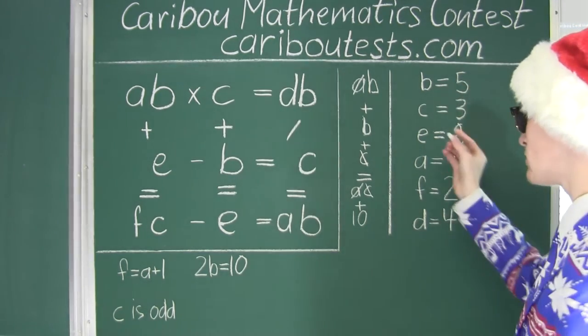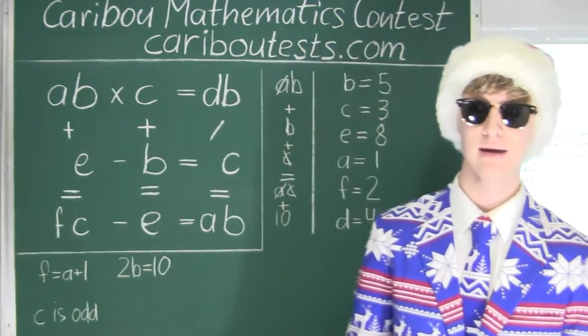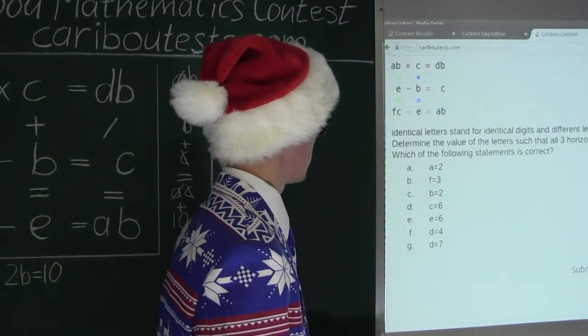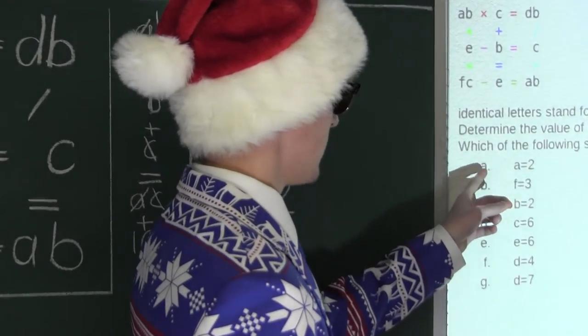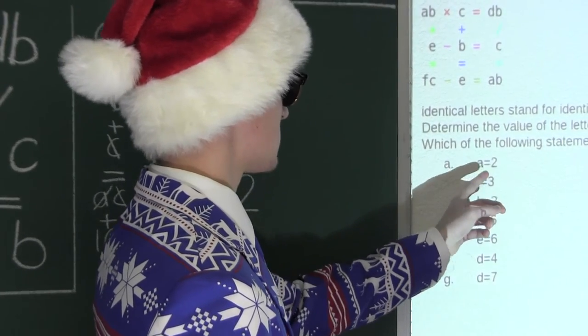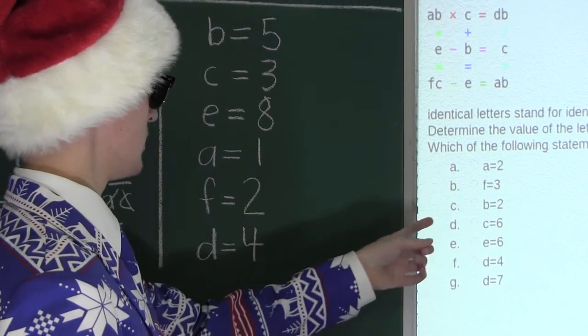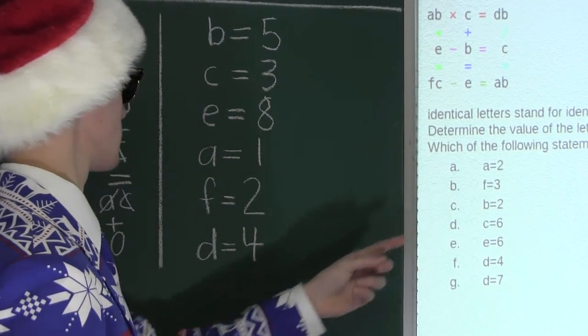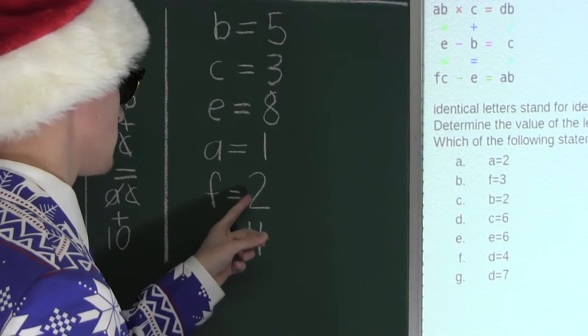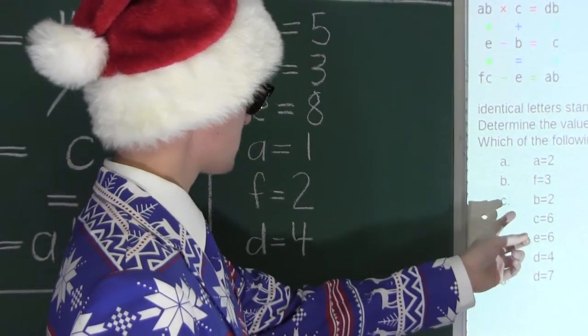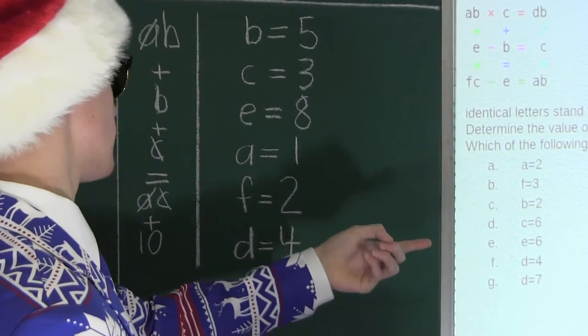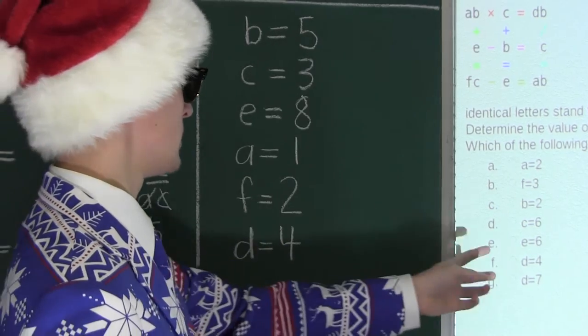Now we have all the values and we can look at the options. Option A. A is equal to two. Well, that's wrong because we know A is equal to one. Option B. F is equal to three. That's wrong. We know F is equal to two. Option C. B is equal to two. That's wrong. We know B is equal to five. D. C is equal to six. No. C is equal to three. That's also wrong.